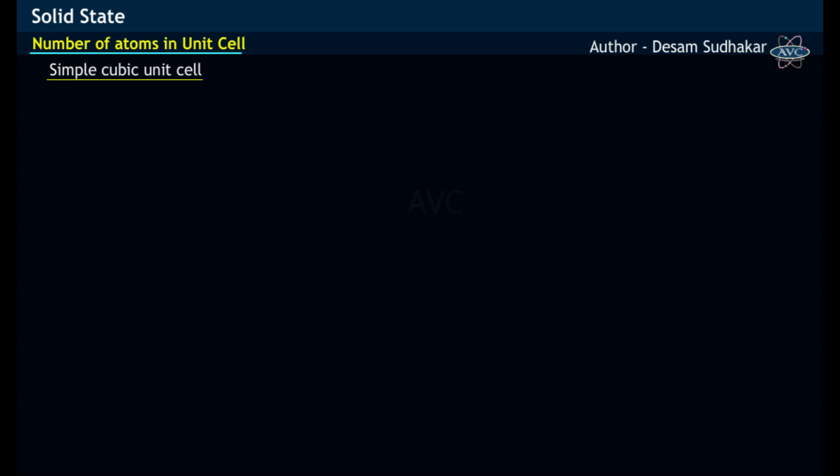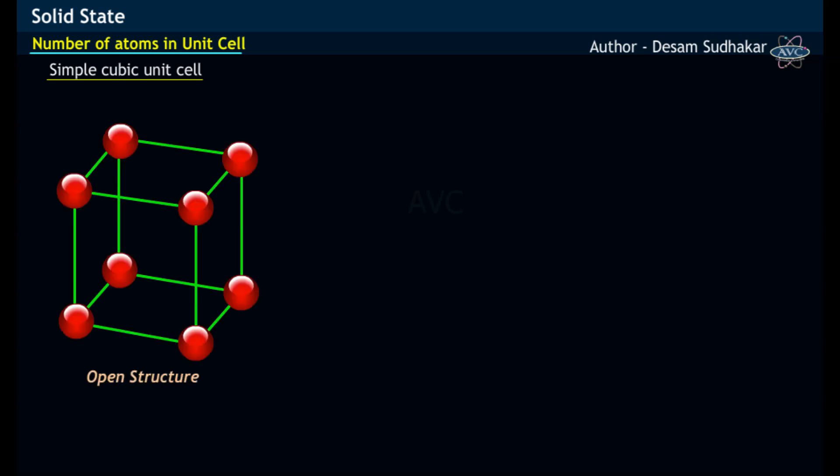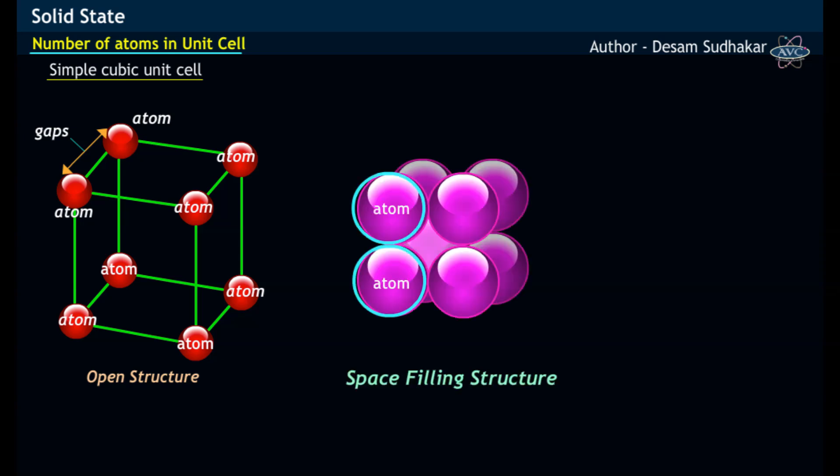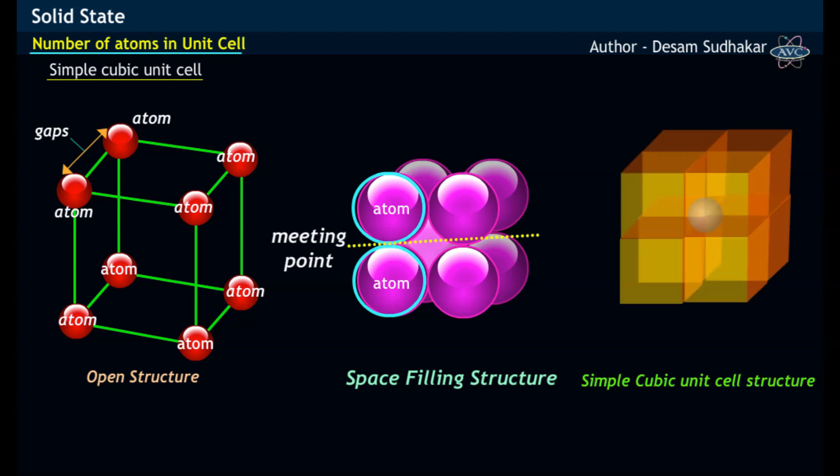Simple cubic unit cell may be represented by open structure with gaps between atoms, the space filling structure with atoms touching each other, and finally the actual simple cubic unit cell structure.